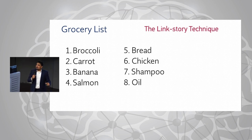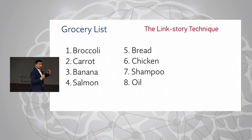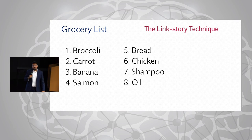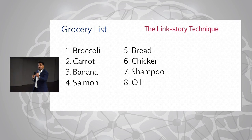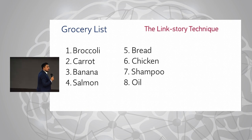Next, chicken. Imagine a huge chicken — six foot four — that walks up towards the bread and holds onto it. Visualize this chicken using its feathered wings to hold onto the bread. Then, shampoo: imagine pouring shampoo all over the chicken, so the chicken is covered in shampoo and foam.